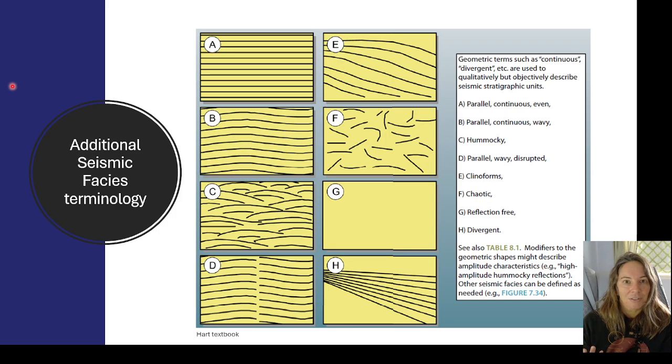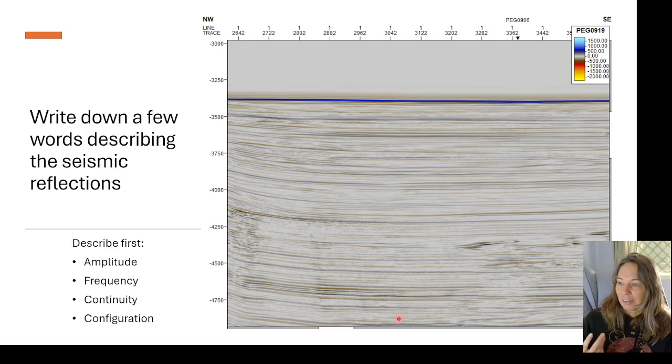These are some additional facies definitions from the Hart textbook. Like I mentioned, we've got lots of words that we can use as descriptors. Here we've got parallel, continuous, and even. He uses parallel, continuous, wavy. Down here, jumping down to D, we've got parallel, wavy, but disrupted. So you can see how we're building these words together to describe it. C is hummocky, like we saw in the last image. E, we've got those clinoforms. F is chaotic, so there's not really any discernible pattern. G would be reflection free, and then H would be divergent. I'm going to pause here in a second for like 10 seconds, but I want you to quickly jot down or just think of how you would describe this seismic here. Let's say up in this area in terms of the amplitude, frequency, continuity, and configuration.